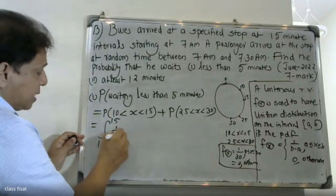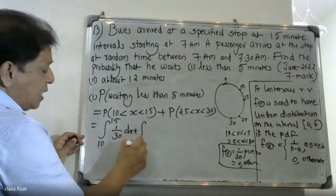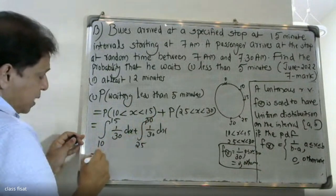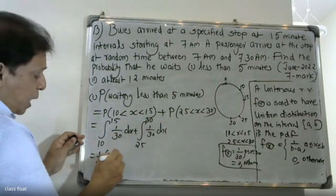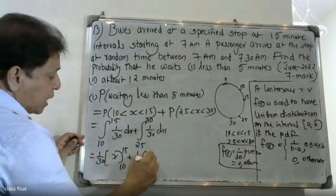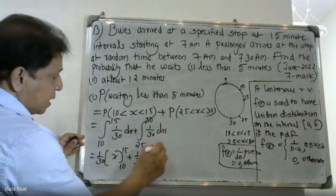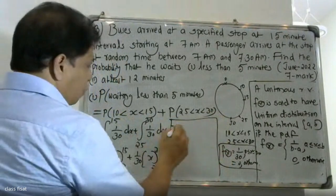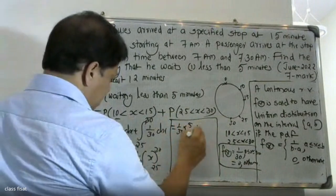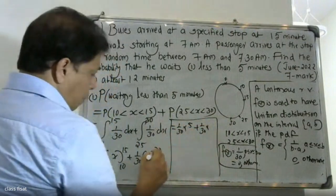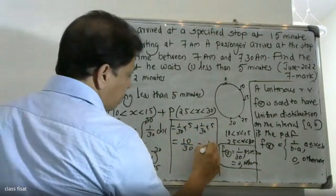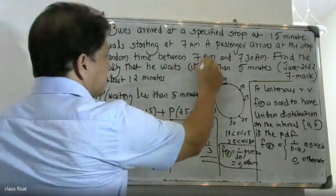Evaluating the integral: 1 by 30 times x, from lower limit 10 to upper limit 15. That is equal to 1 by 30 into (15 minus 10), which equals 1 by 30 into 5, giving us 1 by 6.